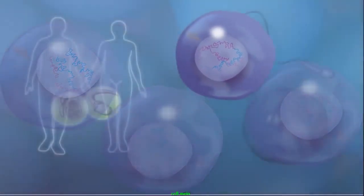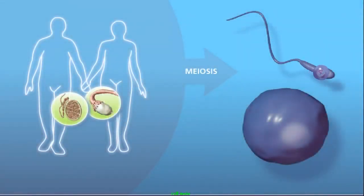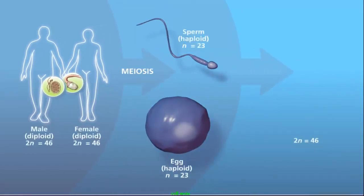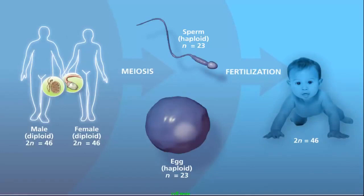The haploid daughter cells will specialize into gametes, either sperm or egg. These fuse in fertilization to form a zygote, which will grow into a child. The child receives half its chromosomes from its mother and half from its father.